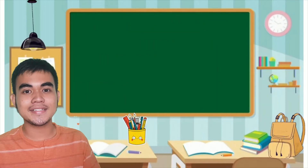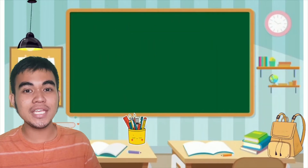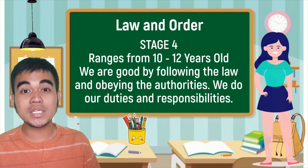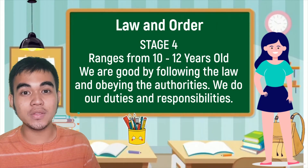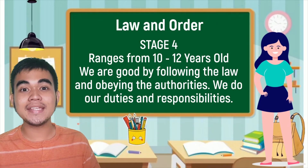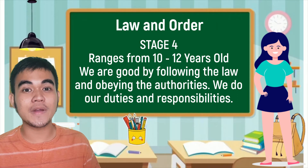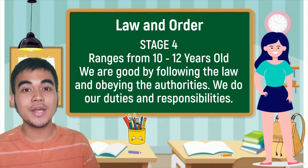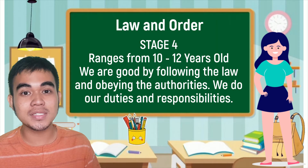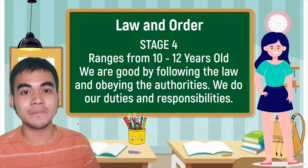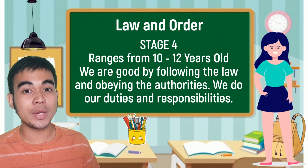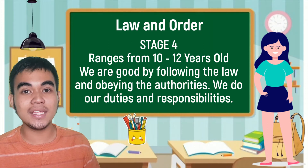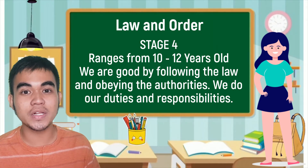The approval can come from individuals or the expectations of our peers, groups, or society. After stage 3 follows stage 4, which is also known as the law and order orientation. It happens from 10 to 12 years old. At this stage, we are good by following the laws and obeying the authorities. We do our duties, respect the authorities, and avoid challenging the social order.